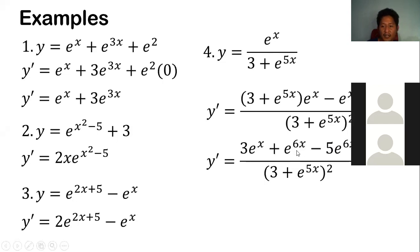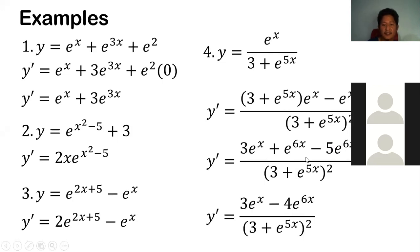Simplifying further, e to the 6x minus 5e to the 6x are similar terms, so we subtract them. We get the final simplified answer. That would be your final answer.